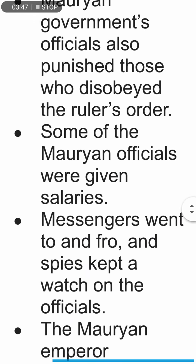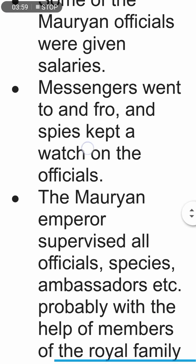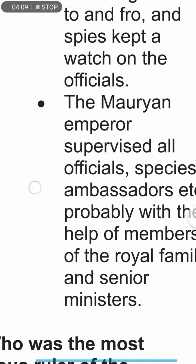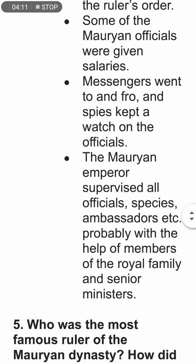Maurya government officials also punished those who disobeyed the orders of the ruler. Some Maurya officials were given salaries. Messengers were sent to and fro, and spies kept a watch on the officials. The Maurya emperor supervised all officials, ambassadors, etc., probably with the help of members of the royal family and some senior ministers.